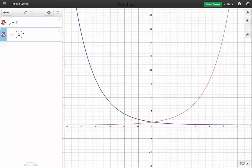Because when x equals 0, they intersect since both are 1. And when x equals 1, the red one is 2, and the purple one is 1 half.